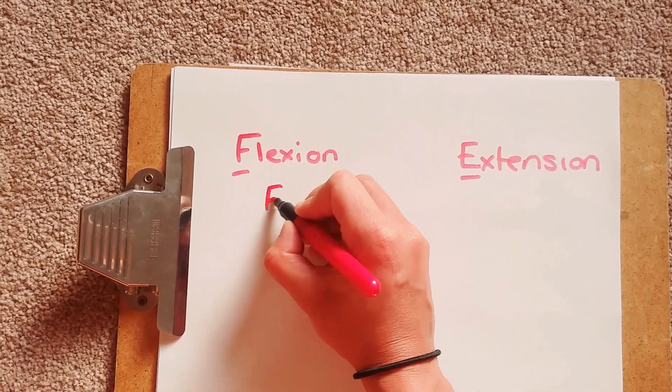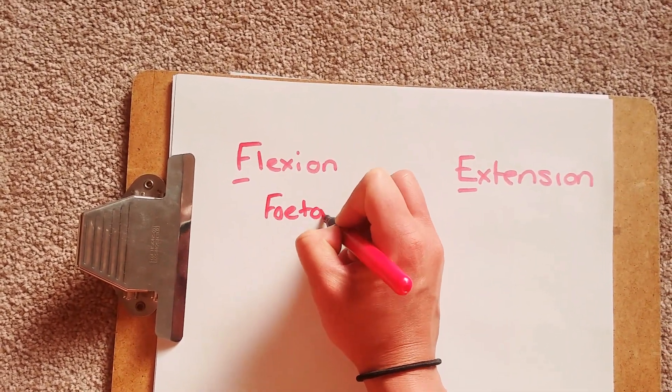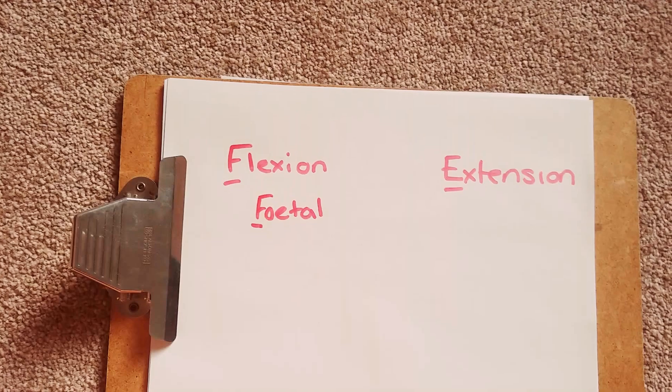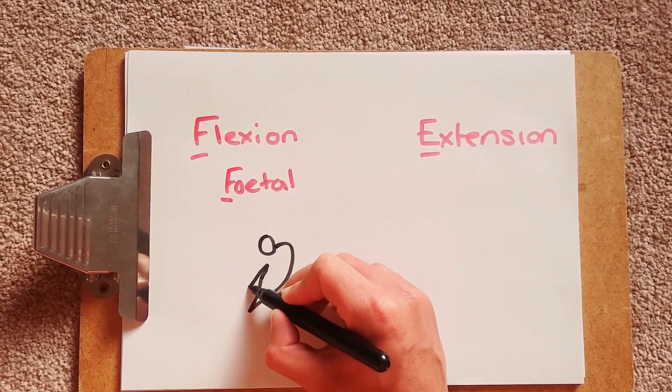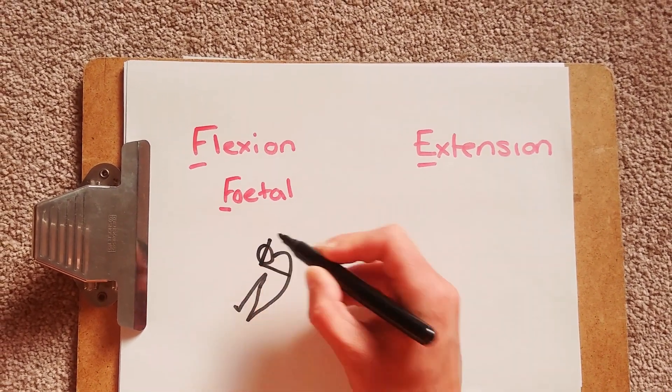Now in flexion we are going to be in a fetal position. So you can use the F of flexion to remember that you're in a fetal position. So now let's draw out a fetal position. Fantastic.